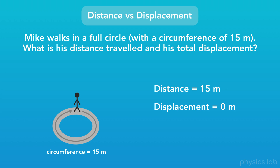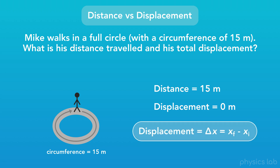Why is that? Well, remember our equation for displacement is the difference between the final position and the initial position. And for this journey, Mike started and ended in the same place. So his final position and his initial position are the same, and that gives us that the displacement is zero.